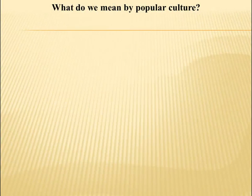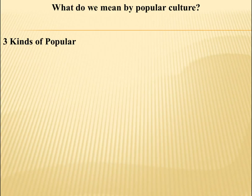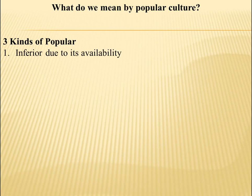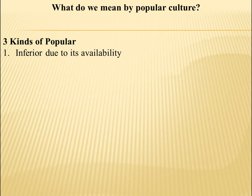Now, what do we mean by popular culture? Let's break that word down. First, we have the word "popular," and we're going to identify three kinds of popular. The first is when we understand popular as inferior due to its availability. If something is very popular — plastic bags are popular — they're also seen as inferior because they are everywhere. When we think about that, we think of something that is so mass-produced and available that it becomes inferior, not seen as good. We see this online with the availability of content — people offering free material, it becomes less valuable.